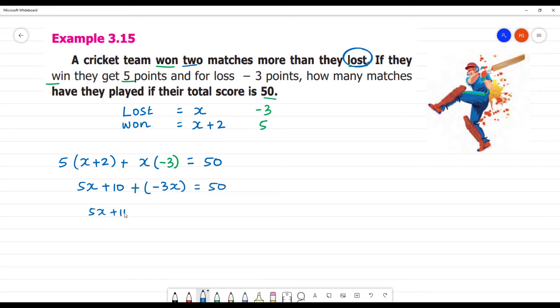5x plus 10, plus into minus is minus. If you look at bracket multiplication, plus into minus is minus 3x, which is equal to 50. 5x minus 3x is equal to 2x.